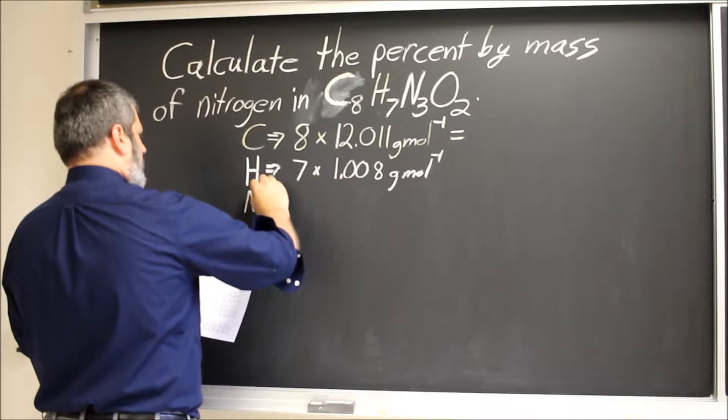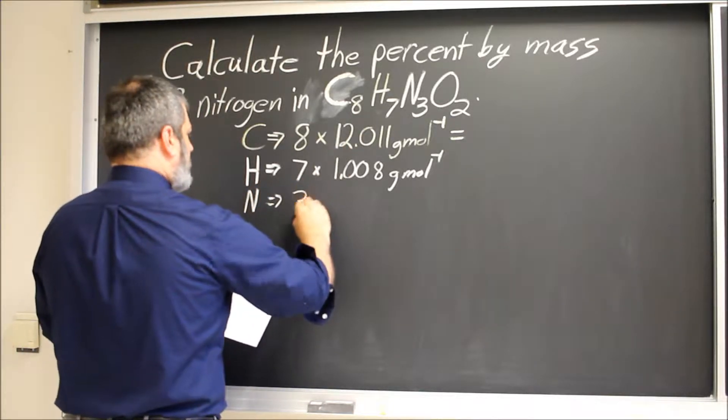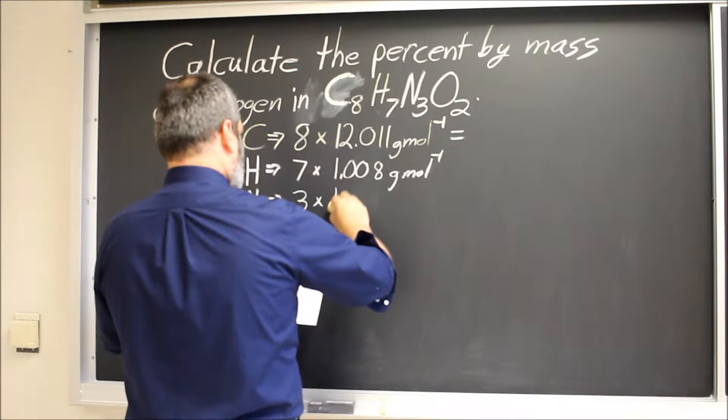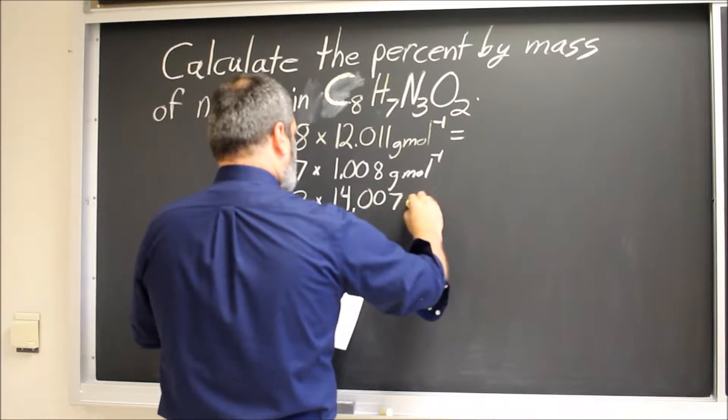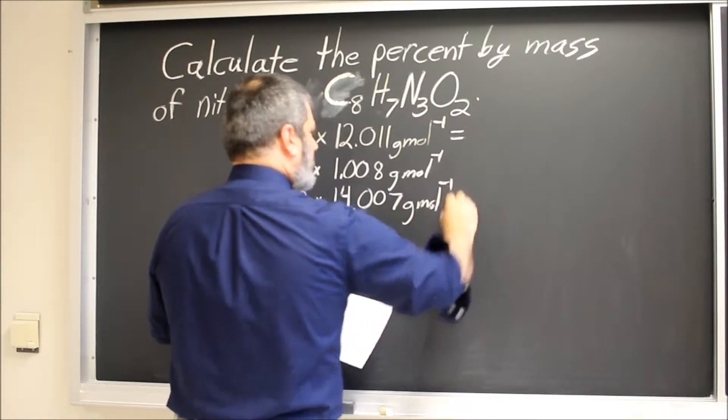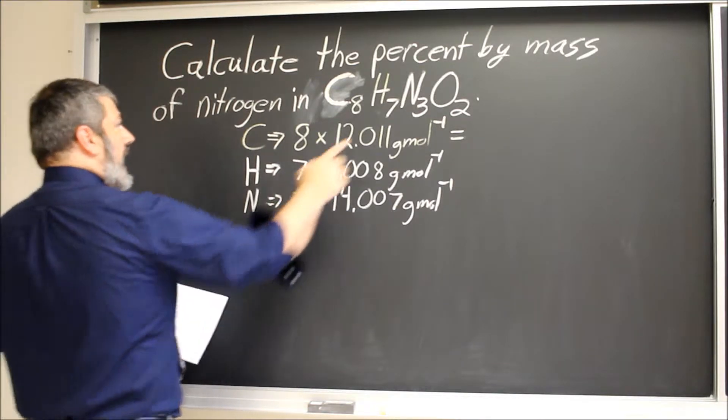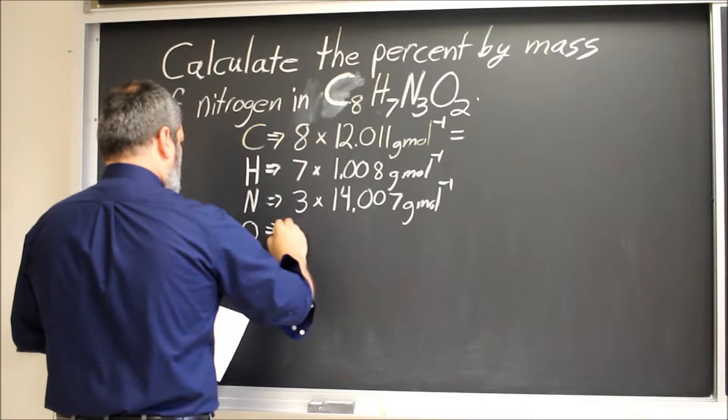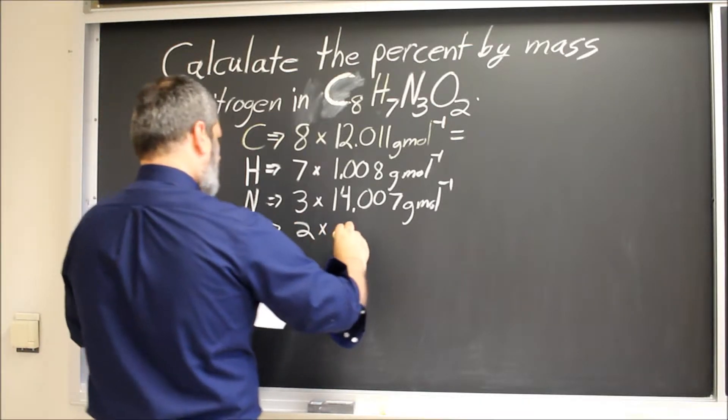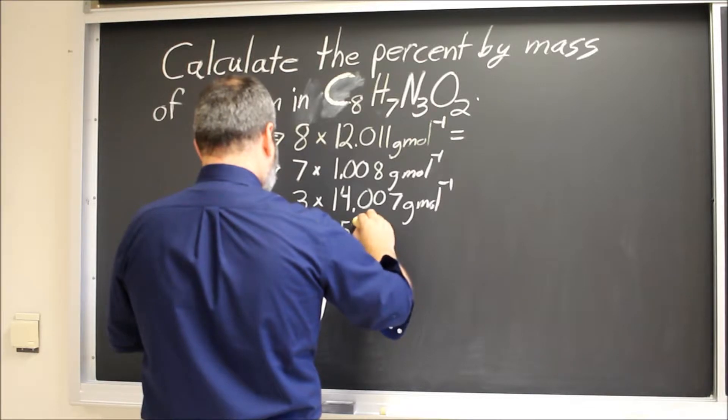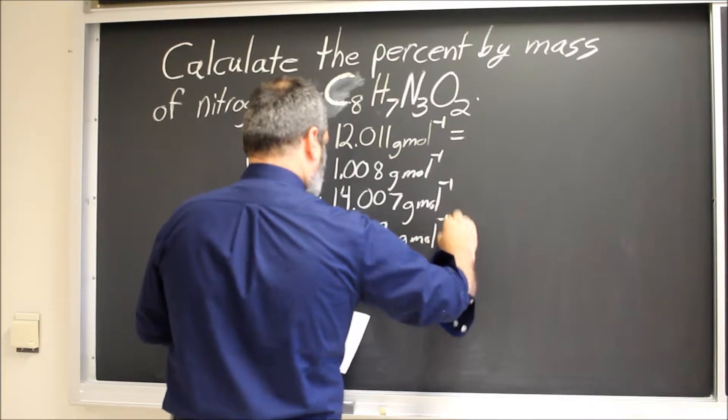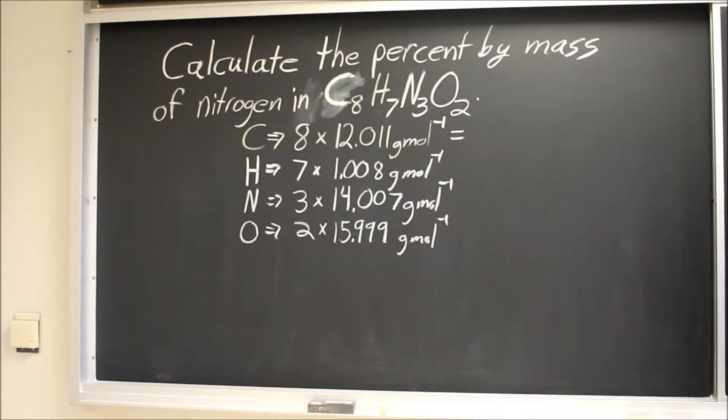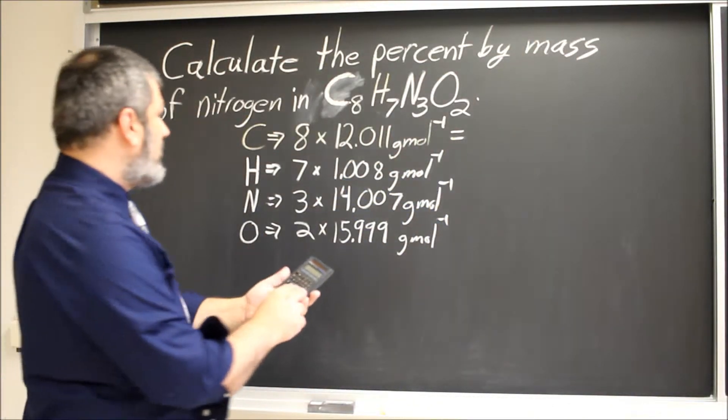Nitrogen, we have three nitrogens. Nitrogen weighs 14.007 grams per mole, and oxygen. So for this particular problem, I haven't done the math yet, so I'm going to actually do that real fast.